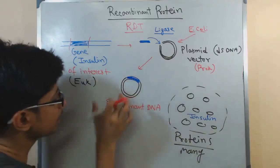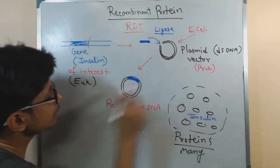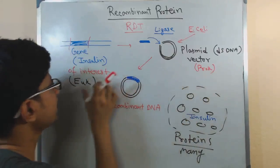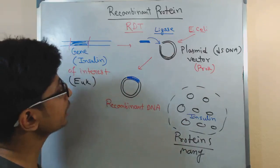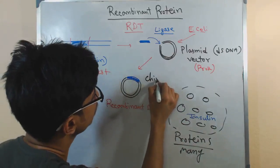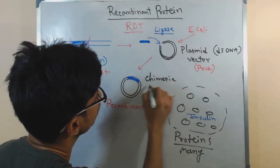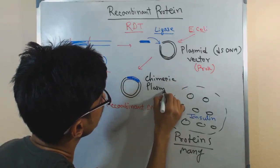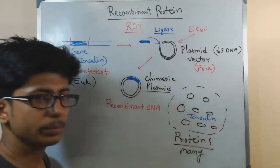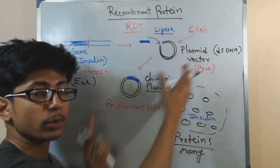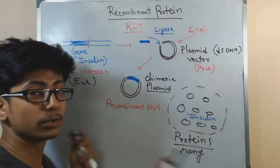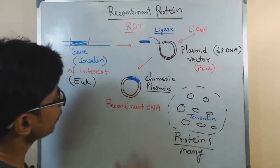Once you prepare this recombinant DNA, and as it is a construct of prokaryotic and eukaryotic segments, we also call it a chimeric plasmid, chimeric vector, because it's a construct from two different species like prokaryotes and eukaryotes.